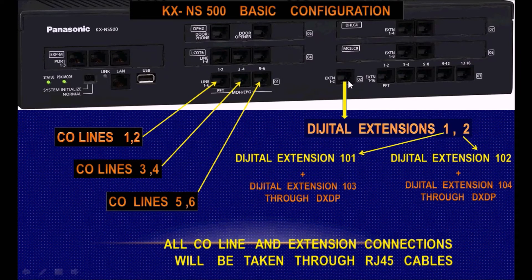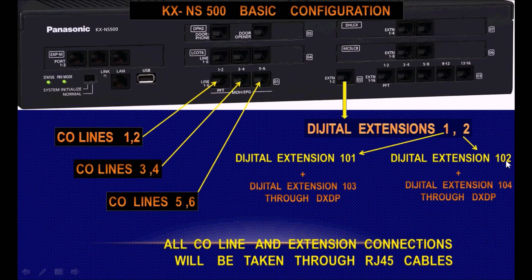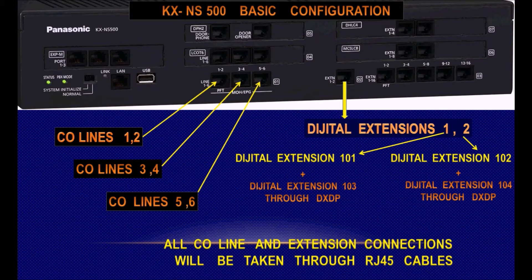This interface gives us two digital extensions: 101 and 102. Each of them can also provide another digital extension through the digital DSS device port. Extension 101 can give us extension 103, and extension 102, which is the second digital port connected to the main unit, can provide yet another digital extension with different programming, a different number, and a different class of service. They share only the physical connection port but are completely different independent extensions.